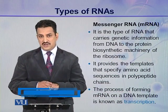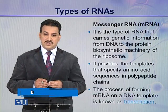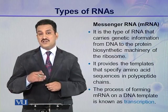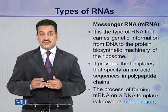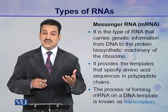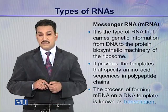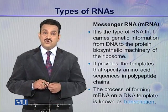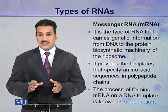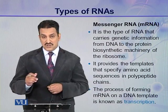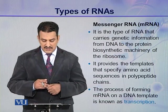The first type is the messenger RNA. As you know, the process of protein synthesis is carried out in the cytoplasm, and DNA is only present in the nucleus — it doesn't go out to the cytoplasm. So how does it convey a message from the nucleus to the site of protein synthesis? This messenger is a ribonucleic acid called mRNA or messenger RNA. It carries genetic information from DNA to the protein biosynthetic machinery — the ribosomes — which are present in the cytoplasm.